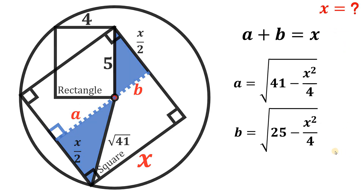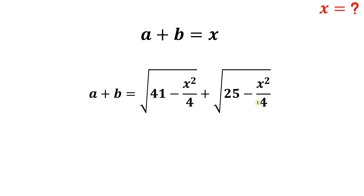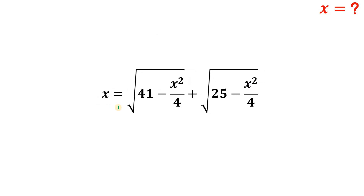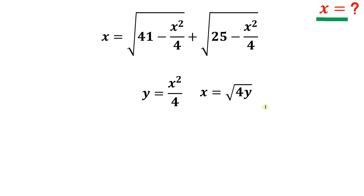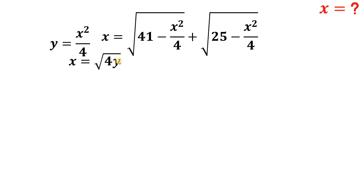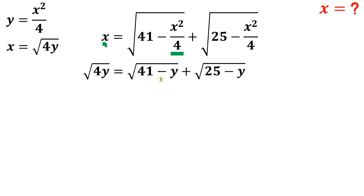Focusing on these three equations, the goal is to find the value of x. Adding the two results: a plus b equals the square root of (41 minus x squared over 4) plus the square root of (25 minus x squared over 4). We know a plus b equals x, so our equation contains x. To simplify this messy equation, we let y equal x squared over 4, which means x equals the square root of 4y. Replacing x squared over 4 and x, our equation becomes: square root of 4y equals square root of (41 minus y) plus square root of (25 minus y).